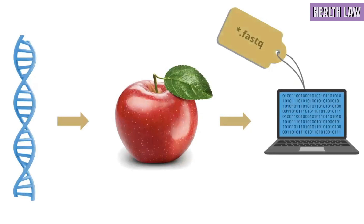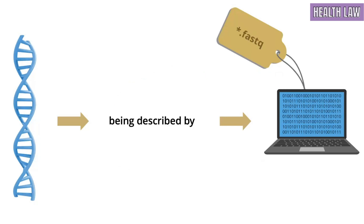Can genomic data be viewed as the fruit of DNA? I suggest not. In property law theory, the fruit-bearing object is not only a necessary antecedent of the fruit, but it must produce the fruit. It seems contrived to suggest that DNA somehow produces genomic data. More aptly, DNA is being described by genomic data.